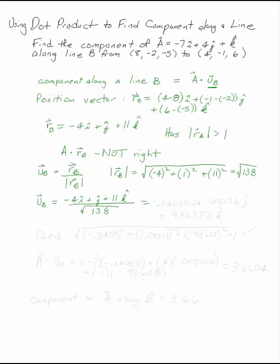That gives you -0.34050i + 0.085126j + 0.936382k.